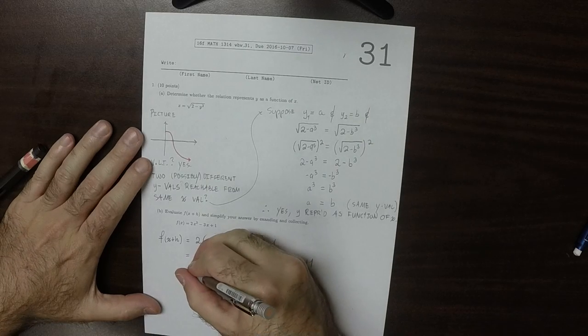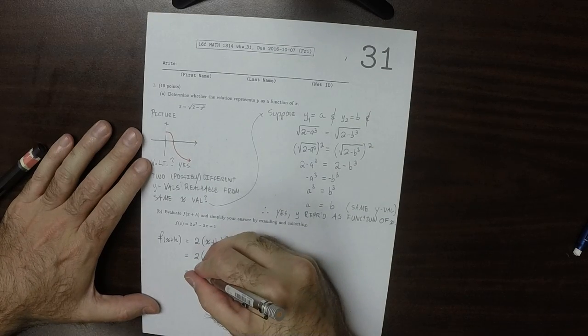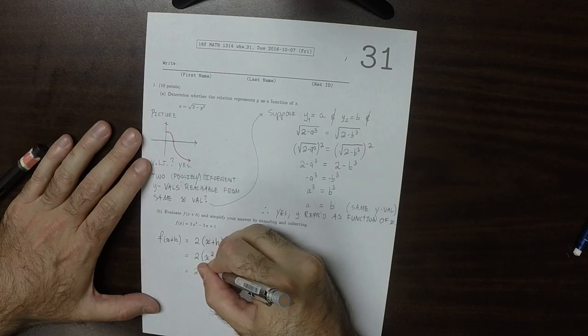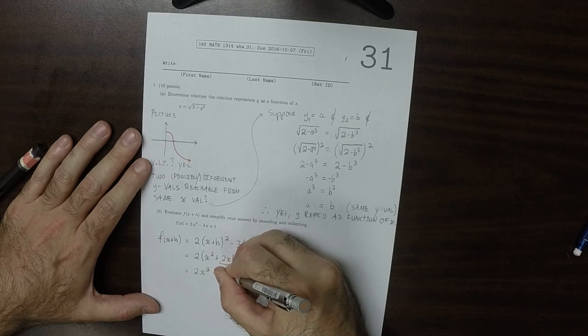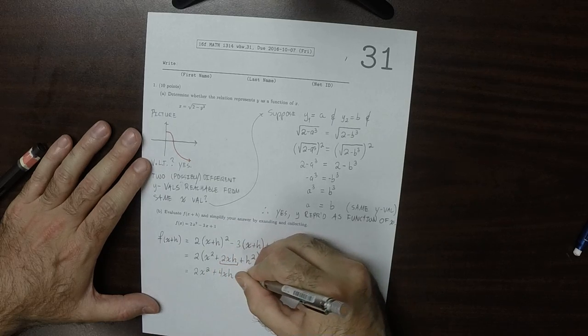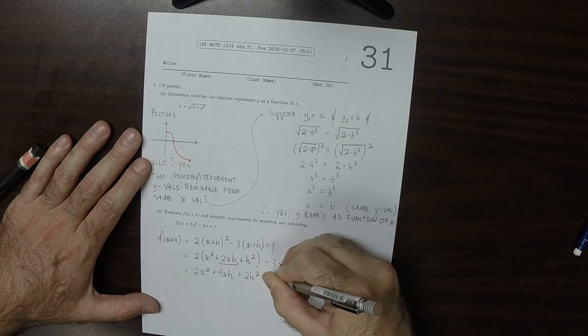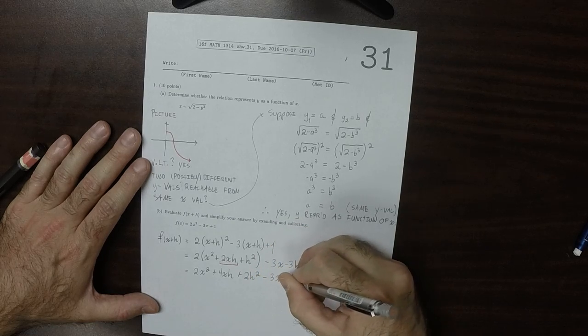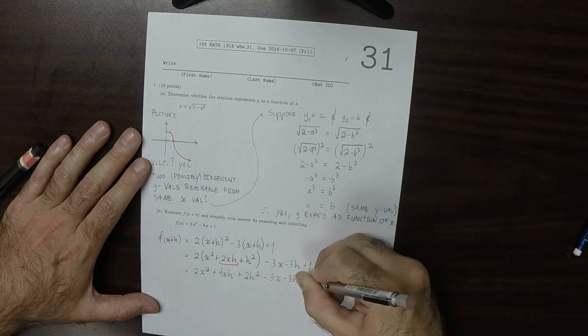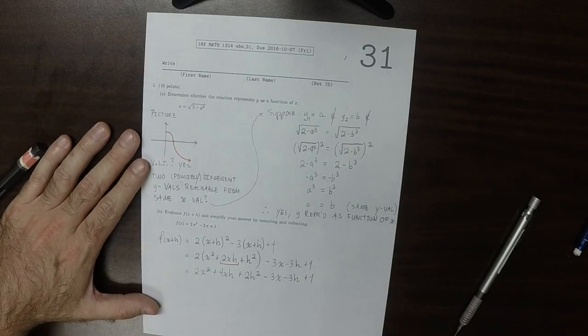So then carrying this out would be 2x squared plus 4xh plus 2h squared minus 3x minus 3h plus 1.